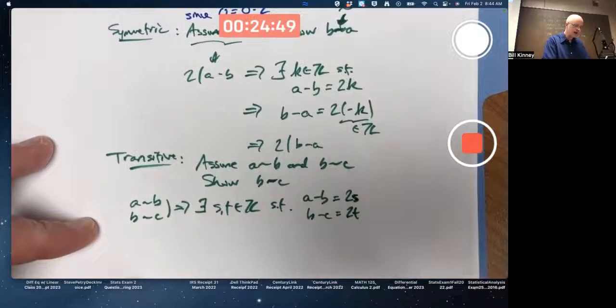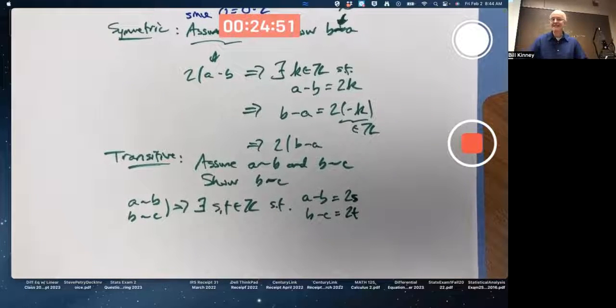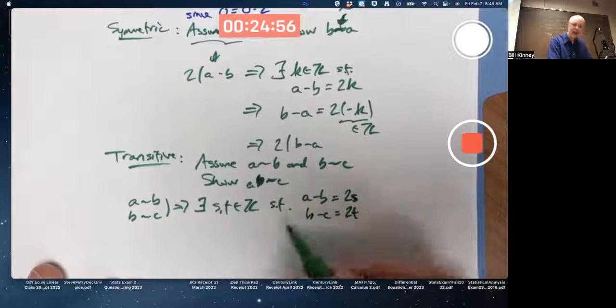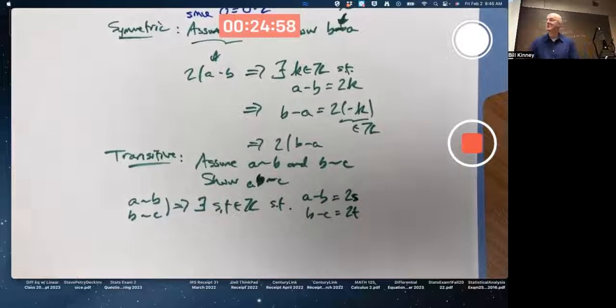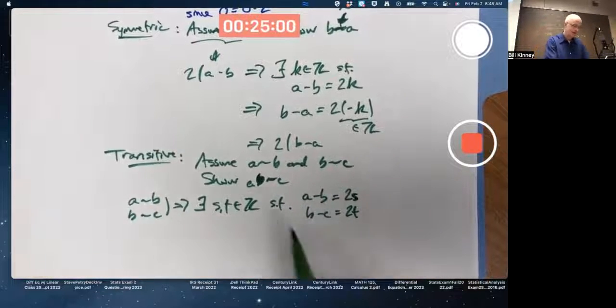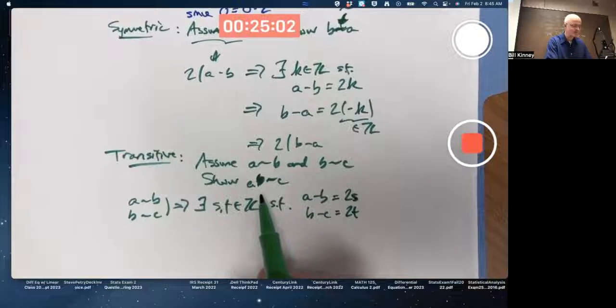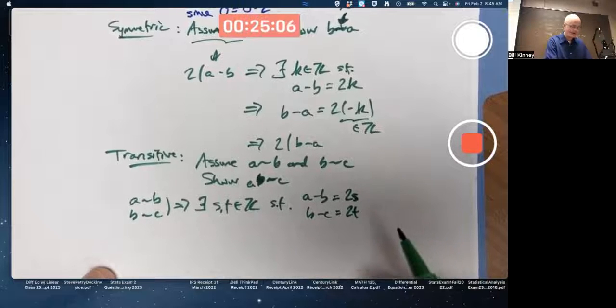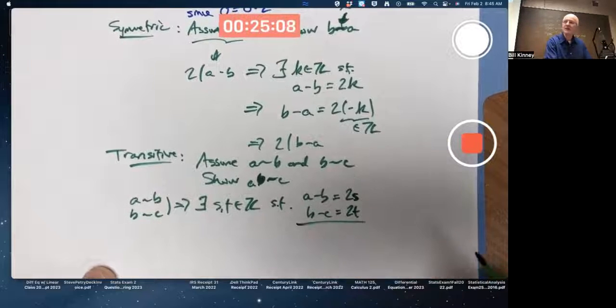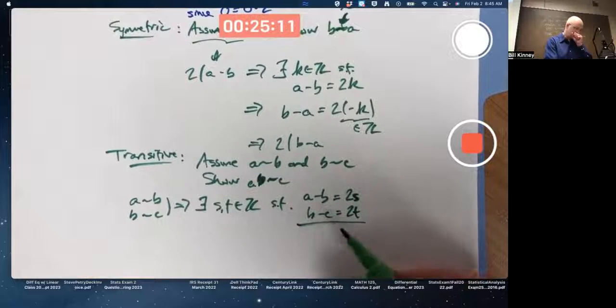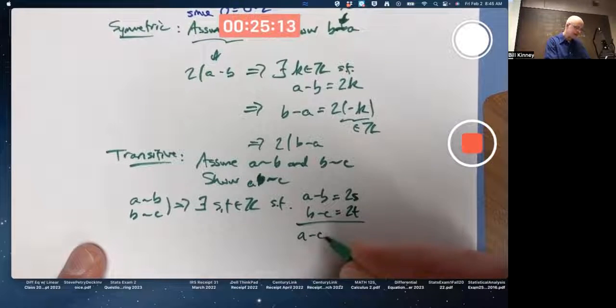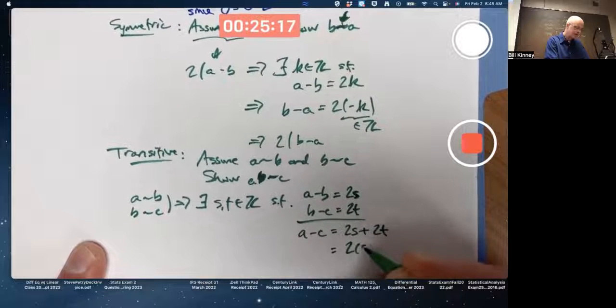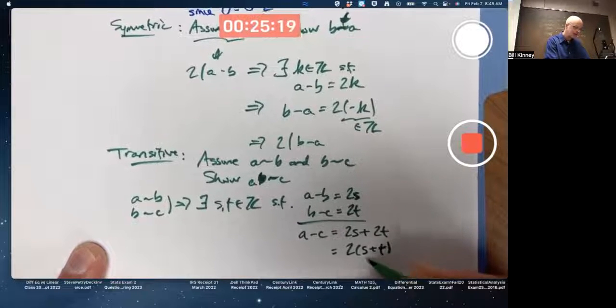A minus B is two times S and B minus C is two times T. What's my goal? My goal is to show A minus C is, typo, A minus C is two times something. I should have put an A there. Sorry. How do I do that? How about adding these two equations? The Bs will cancel. You're left with A minus C equals two S plus two T which is two times S plus T. Two times an integer.